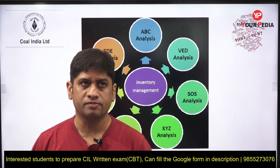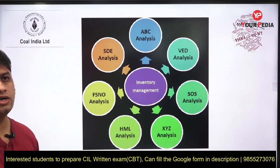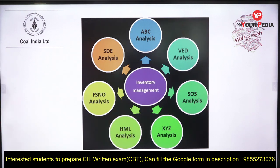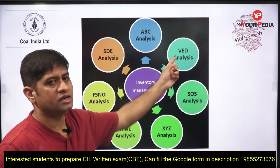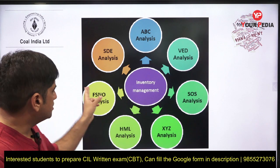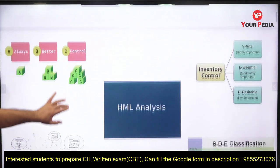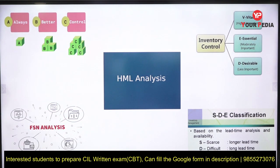There are different ways in which inventory items can be classified. You can do ABC analysis — Always Better Control — VED analysis, HML analysis, FSN analysis, and SDE analysis. Out of all these, the most important are ABC, VED, and SDE. In this lecture, I am going to cover ABC analysis, VED analysis, SDE analysis, and then FSN or HML analysis.